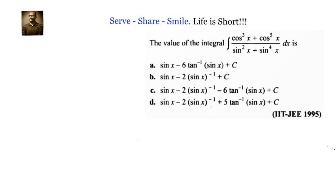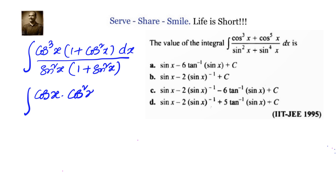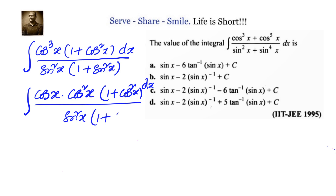First we write down what is given. Can we take cos³x common in the numerator? We write it as cos³x times (1 + cos²x) dx, divided by sin²x times (1 + sin²x) in the denominator. We then expand cos³x as cos x · cos x · cos²x to isolate one cos x factor.